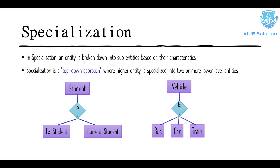The next concept is specialization. In specialization, an entity is broken down into sub-entities based on their characteristics. Specialization is basically the opposite of generalization. In generalization, lower entities are combined into one main entity, whereas in specialization the main entity is broken down into sub-entities.